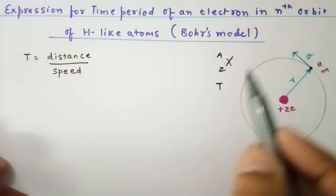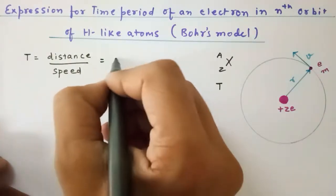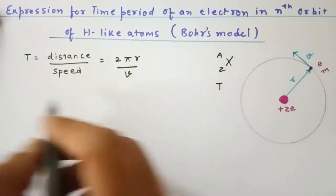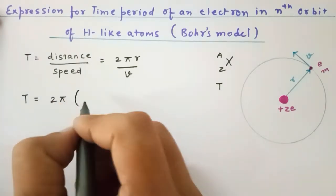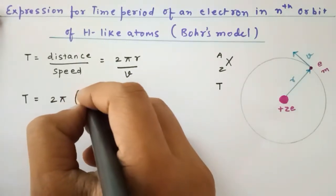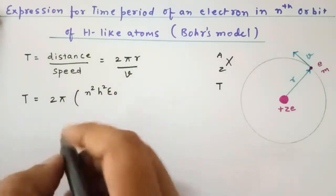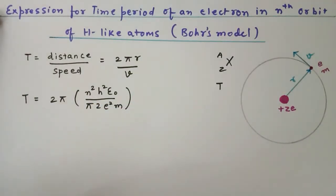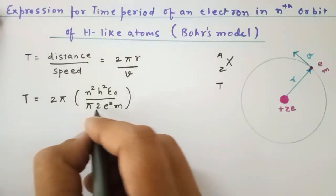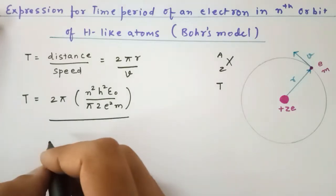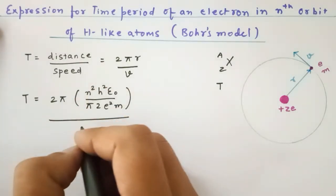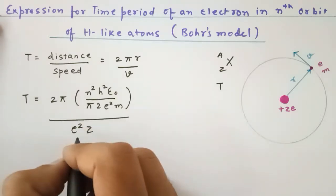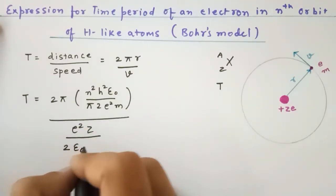Now distance can be given as one circular round, means 2πR, divided by speed V. Now we already derived the expressions for R and V, so let us substitute them. 2π times the R expression that we had derived was N² H² ε₀ upon π Z E² M. This was the expression of the radius that we had derived. Where Z is the atomic number, and upon V — it is being divided by V. The V expression, again we have already derived it, that is E² Z upon 2 ε₀ N H.